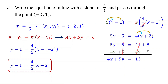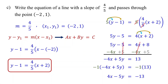Remember, in standard form, the coefficient of x should be positive, but here it is negative. To make it positive, multiply both sides of the equation by negative 1. Multiplying by negative 1 simply changes the sign of each term. This is the equation in standard form.